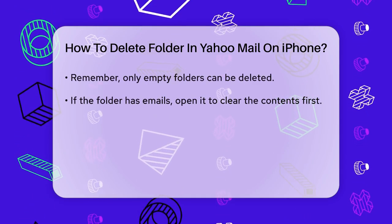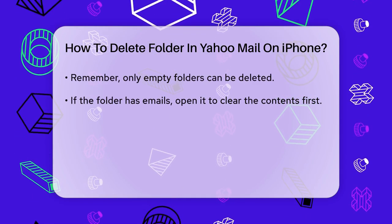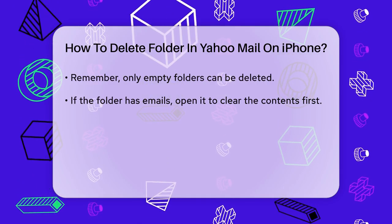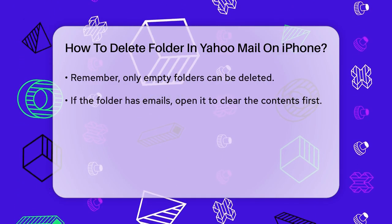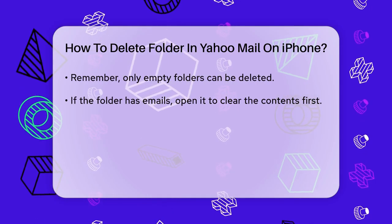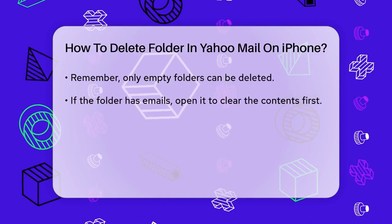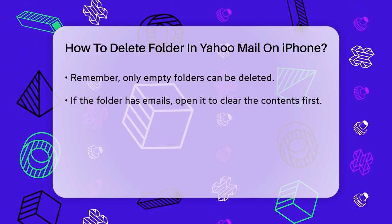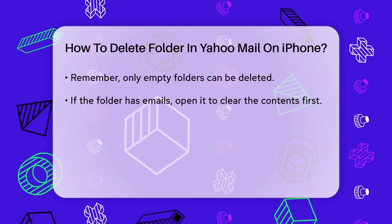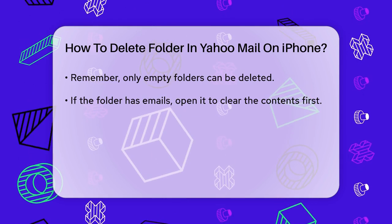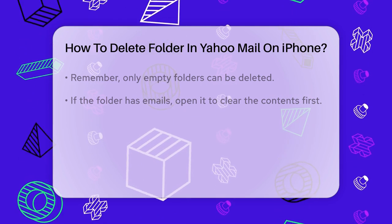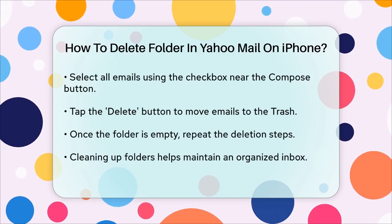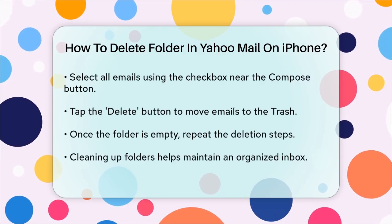However, there's an important thing to remember: you can only delete folders that are completely empty. If the folder you want to delete isn't empty, you'll need to clear it out first. To do this, open the folder, select all the emails by tapping the checkbox near the Compose button, and then tap the Delete button to move them to the trash. Once the folder is empty, you can repeat the steps to delete it.